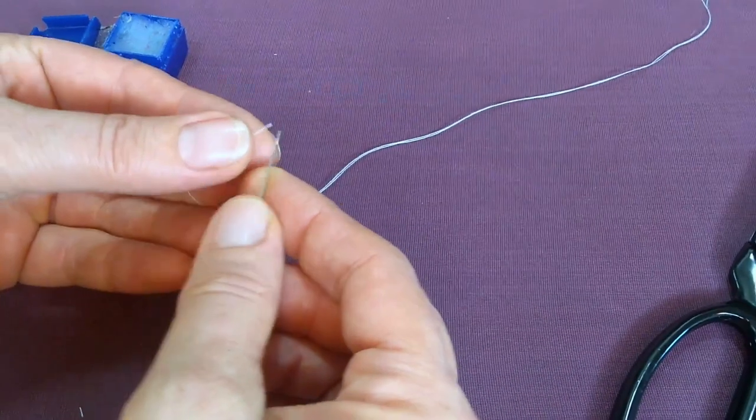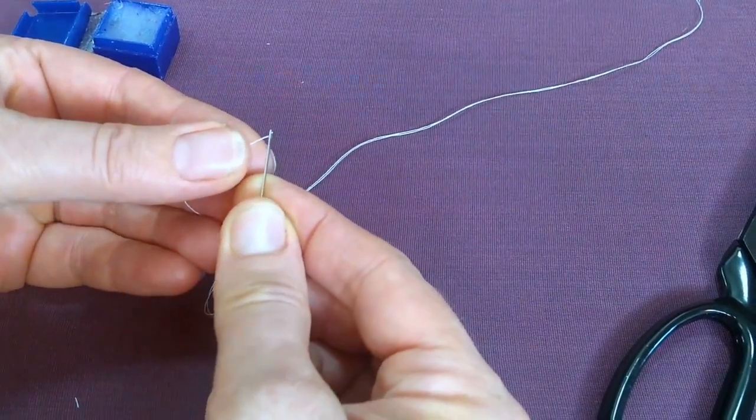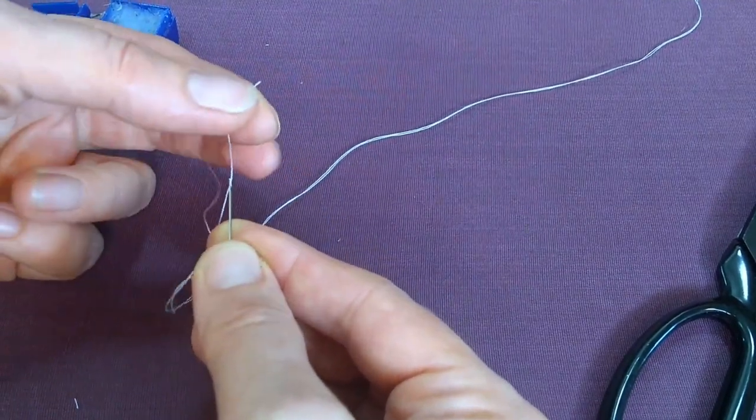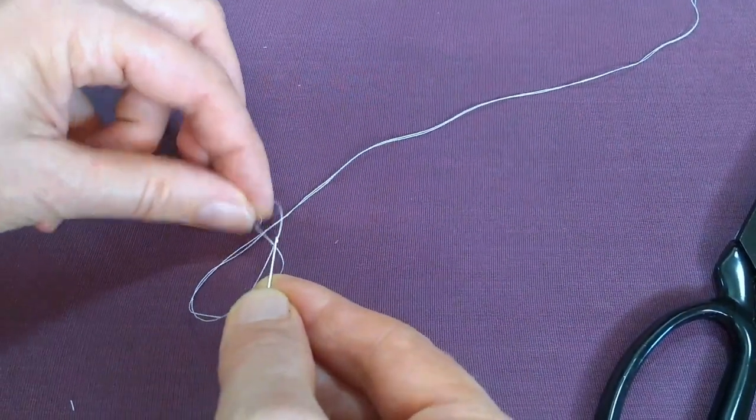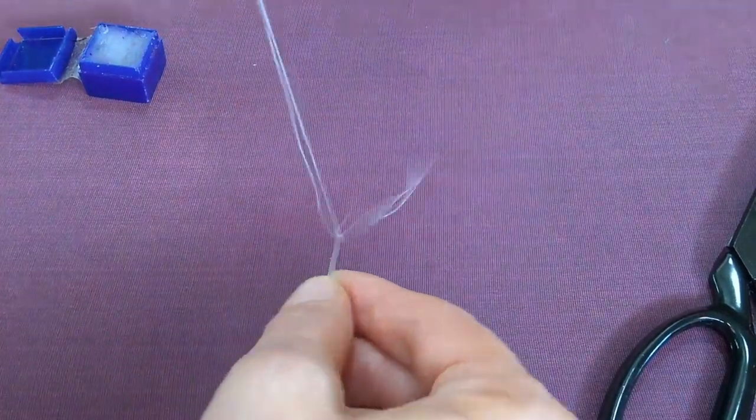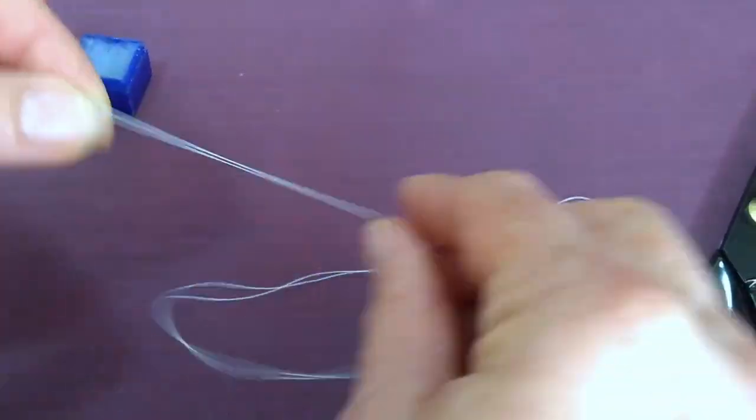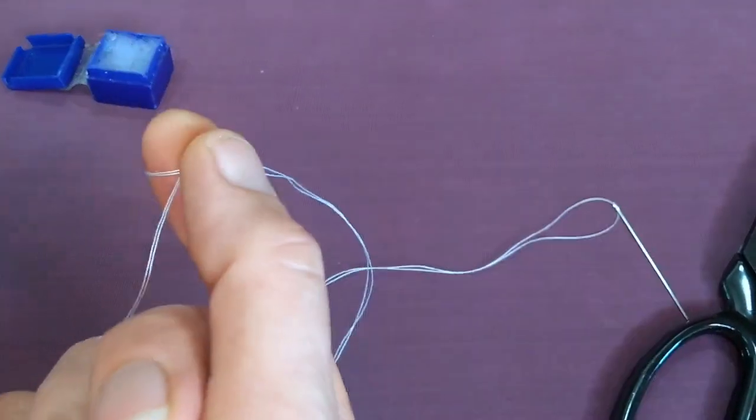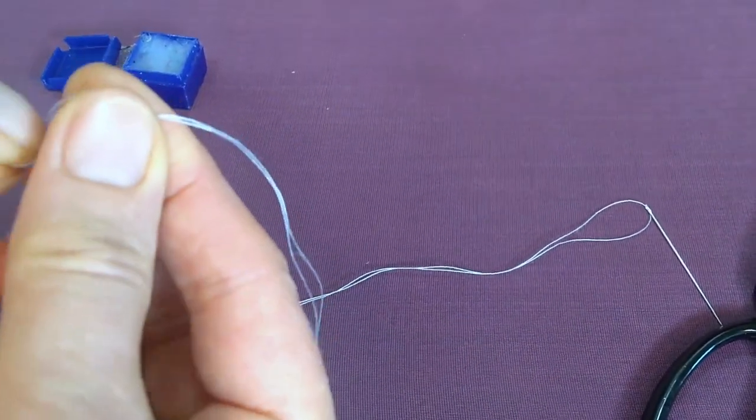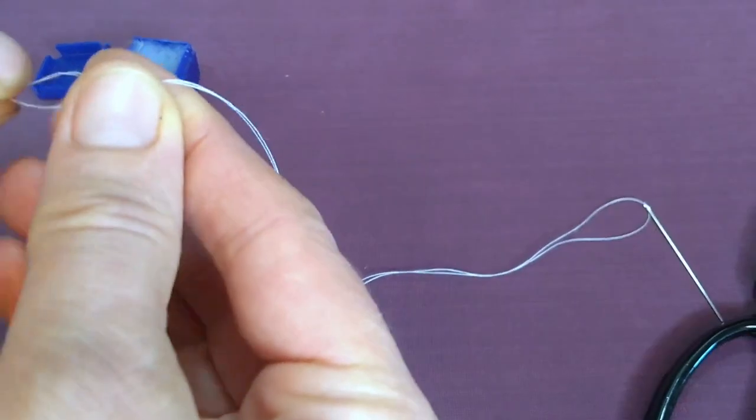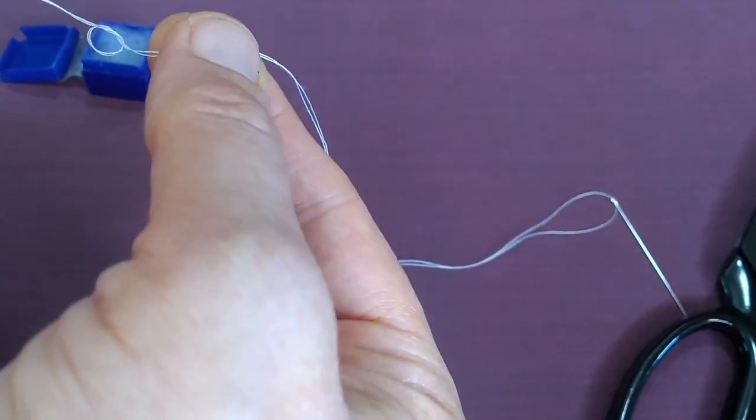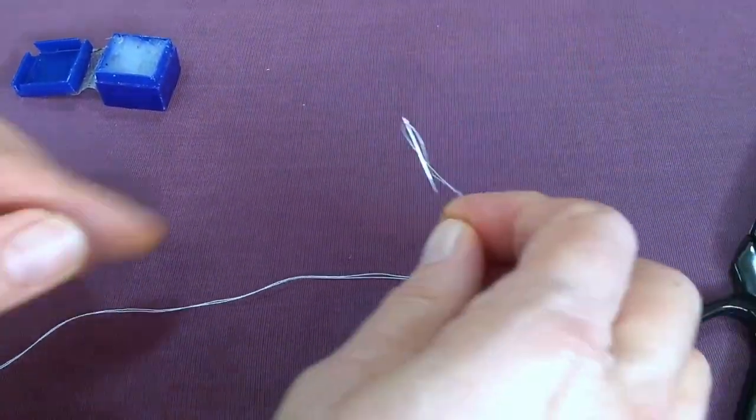I'll hold one of the cut ends, hold the needle steady, and poke the thread through the eye of the needle. It might take a couple tries. Then I'll gather my cut ends, pull them out to the bottom, hold the thread like this, make a loop around my finger, take those cut ends again, and poke them back through the loop to form a knot. Pull it tight, and I have needle and thread ready to sew.